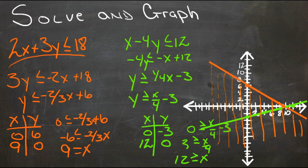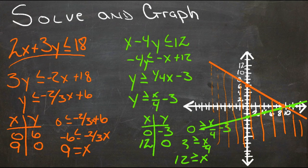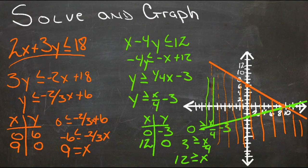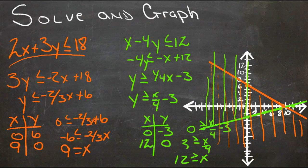For the green line, y ≥ x/4 - 3, so y can be the value on the line or anything greater. This shaded region goes upward from that line at all points.